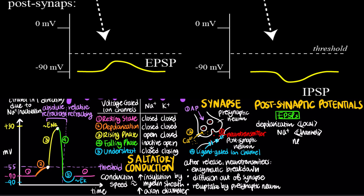The major excitatory neurotransmitter in our body is glutamate. On the other hand, inhibitory postsynaptic potentials, or IPSPs, are hyperpolarizations that move the membrane potential farther from the threshold. They usually involve the opening of ligand-gated potassium and chloride channels. The major inhibitory neurotransmitter in our body is GABA.